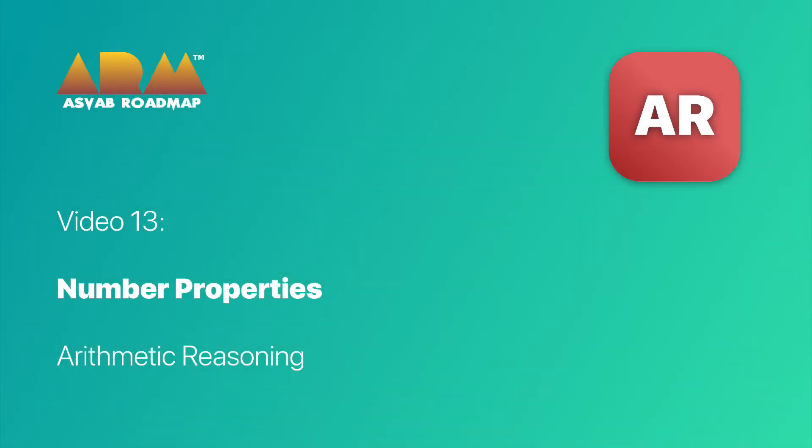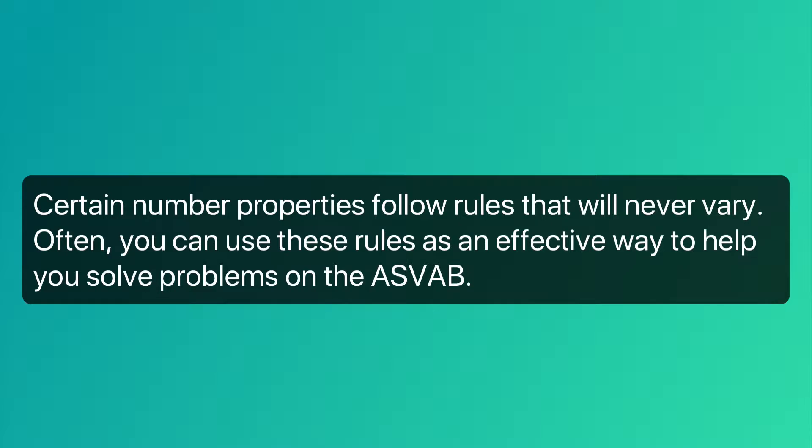Welcome back to ASVAB Roadmap. We're going to start out with number properties. Certain number properties follow rules that will never vary. Often you can use these rules as an effective way to help you solve problems on the ASVAB.